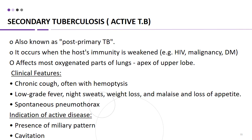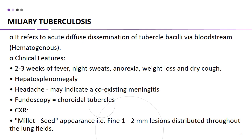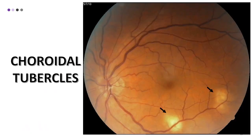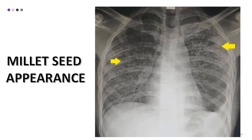The presence of miliary pattern and cavitation are indications of active disease. Miliary TB refers to acute diffuse dissemination of tuberculous bacilli via the bloodstream. Clinical features include 2–3 weeks of fever, night sweats, anorexia, weight loss, and dry cough. Hepatosplenomegaly may also occur. Headache may indicate coexisting meningitis. Fundoscopy will show choroidal tubercles, and chest X-ray will show a millet seed appearance — fine 1–2 mm lesions distributed throughout the lung fields. The fundoscopy picture shows choroidal tubercles pointed with an arrow, and the chest X-ray confirms the millet seed appearance.